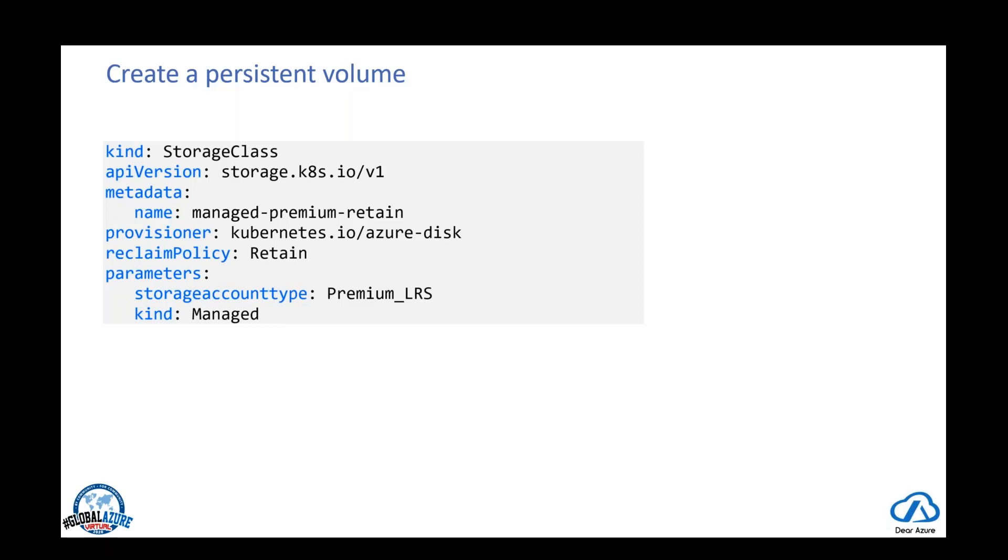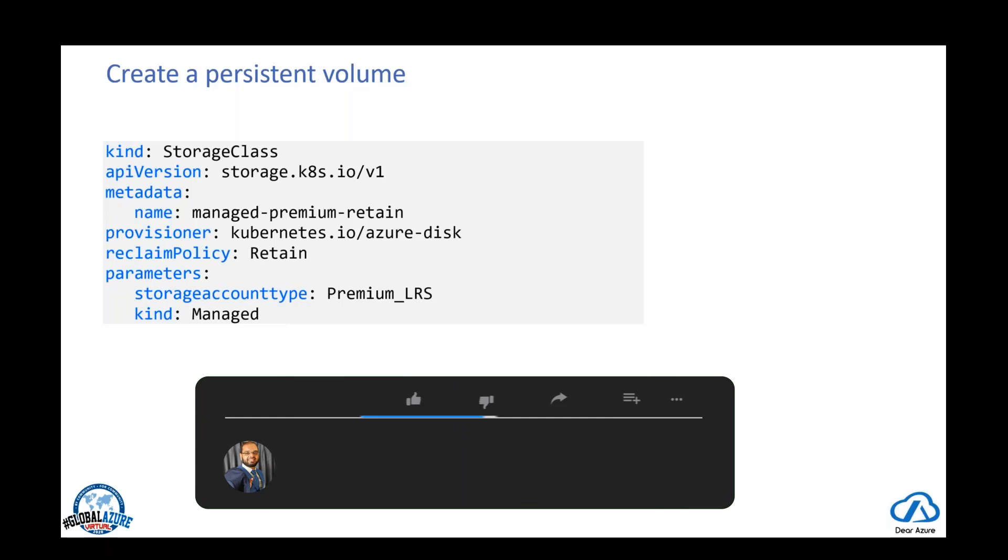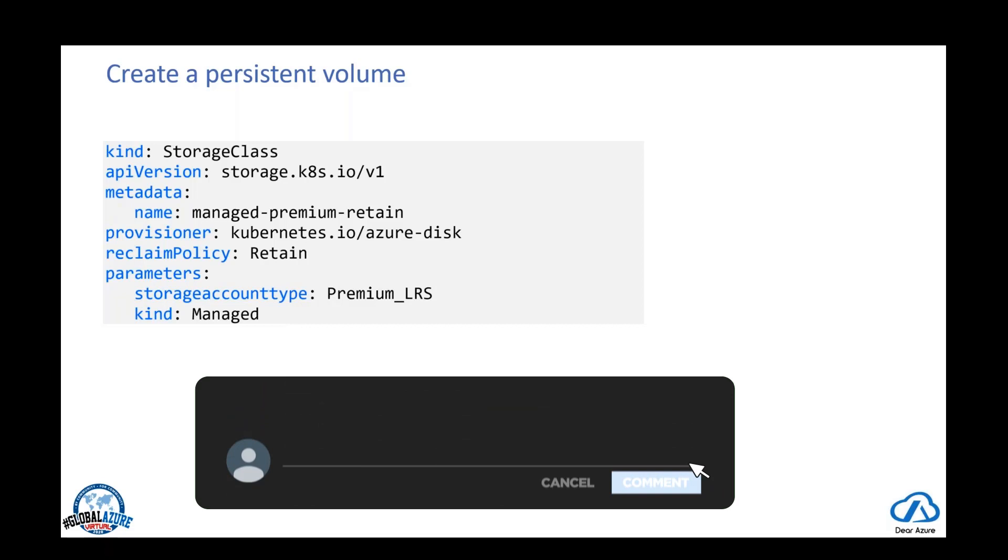To define different tiers of storage, you can have a premium or standard. First, you create a storage class and the storage class also defines the claim policy that I mentioned is necessary to create attached volume dynamically. So this claim policy controls the behavior of the underlying storage in Azure. When the pod is mounted, the volume is deleted and the persistent volume then is attached as required. In this case, this simple YAML that you see on screen is showing a sample using a premium managed disk and specify that the underlying Azure disk should be retained when the pod is deleted.